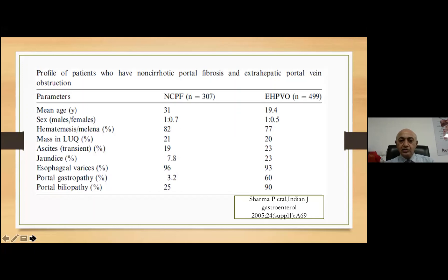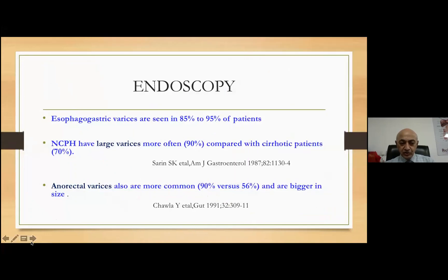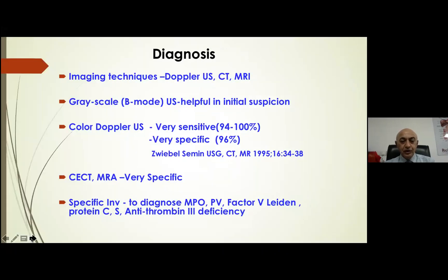Younger age group, higher incidence of portal biliopathy and portal gastropathy — more likely you are talking of EHPVO versus NCPF. Endoscopically, larger varices are more likely with NCPF as the cause of portal hypertension rather than cirrhosis. Anorectal varices are also more common in NCPF. Diagnosis is made by good quality ultrasonography including Doppler studies, and if there is doubt, angiography can confirm the site of the lesion and degree of collateralization of the blocked components.